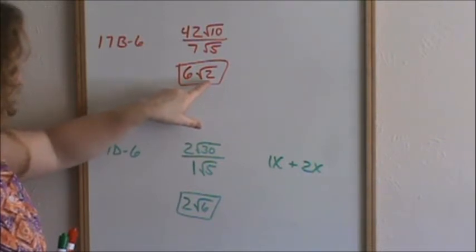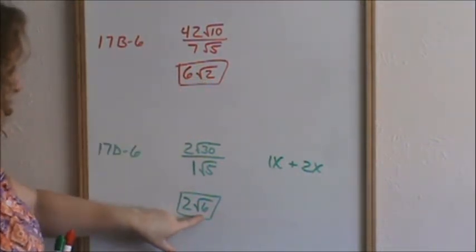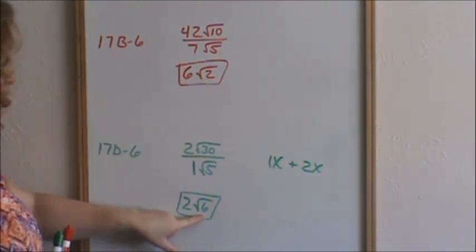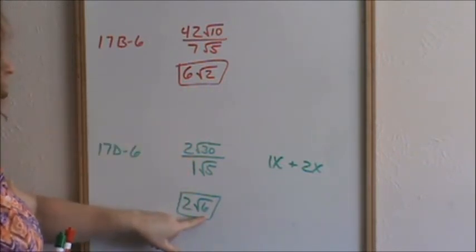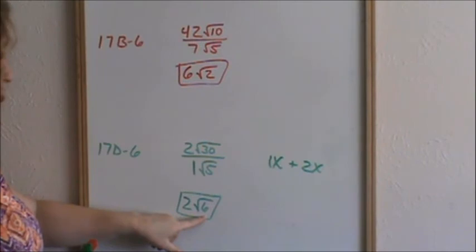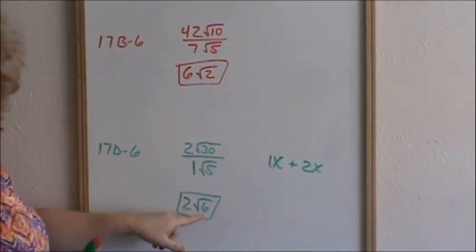In both of these answers, the square root of 2 and square root of 6 cannot be simplified anymore. So the answer stays with square root of 2 and square root of 6. For more on simplifying radicals, see the video on simplifying radicals.